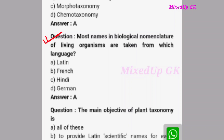Next question: Most names in biological nomenclature of living organisms are taken from which language? Options are Latin, French, Hindi, or German. The correct answer is option A: Latin. The maximum biological nomenclature names are always in Latin.